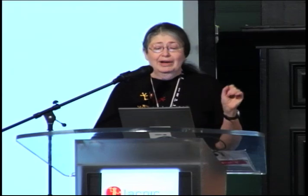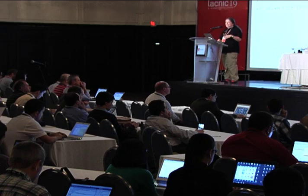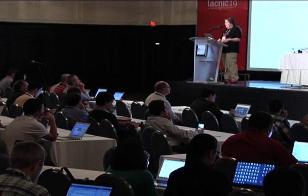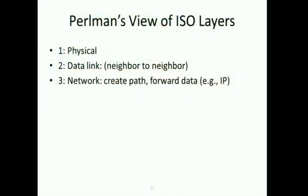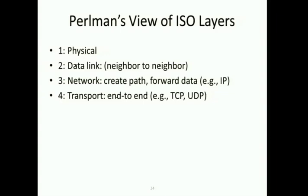First we need to review network layers. The standards body ISO is credited with naming the layers — you don't have to take them terribly seriously. Most things are not implemented as strict layers, but it's a good way to think about networking. Layer 1 is the physical layer — how do you signal a bit? Layer 2 is how you get a message to a neighbor on the same link. Layer 3 is creating an entire path and forwarding data through a network. Layer 4 is end-to-end: numbering messages, retransmitting if lost — that's like TCP. Layers 5 and above are boring.